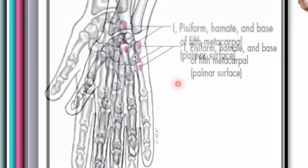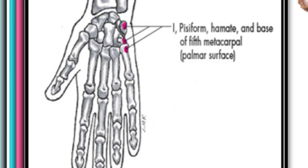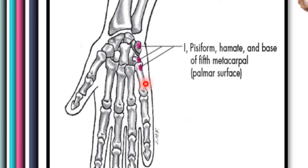Here we are seeing the points of attachment of this muscle. The tendon runs distally to attach to the pisiform bone. From the pisiform bone it also extends to attach to the hamate, the next carpal bone. The pisiform and hamate are two of the eight bones of the wrist found on the medial side. From the hamate it extends to the base of the fifth metacarpal. So the insertion is the pisiform, then via the pisohamate ligament and pisometacarpal ligament.